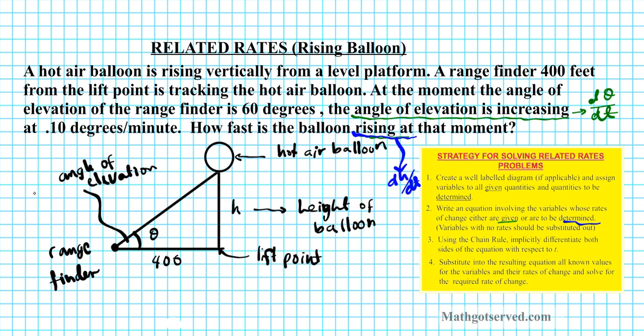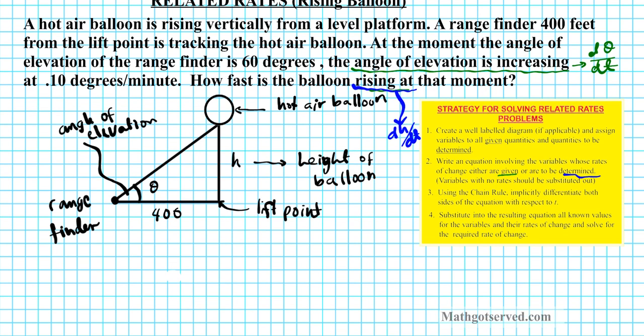So we need to relate h and theta. This is a nice problem because we do not have any other variables that we have to substitute in order to solve this problem. We just have two variables and that's excellent. All right. So how can we relate h and theta in this situation? Since this is a right triangle, we're going to make use of right triangle trigonometry. All right?